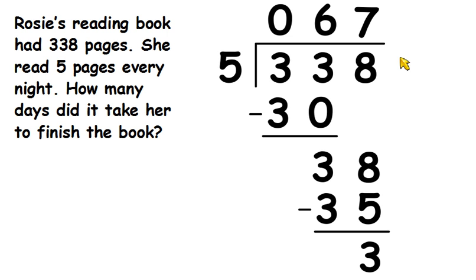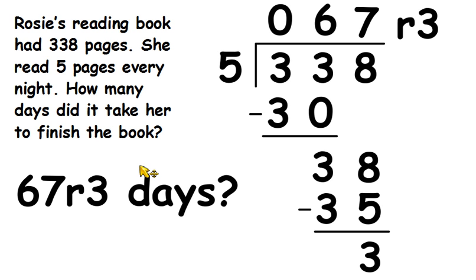So the answer to 338 divided by 5, the answer to the calculation, is 67 remainder 3. However, we've got a problem. The question asks us how many days did it take her to finish the book. Now can you have 67 remainder 3 days? Clearly that doesn't make sense.